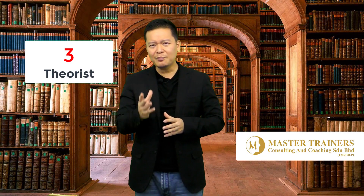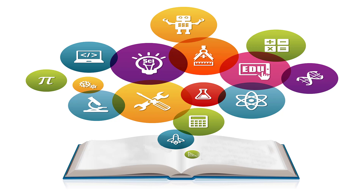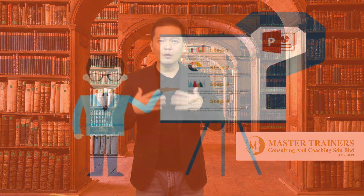The third type of audience is what I call the theorist. When theorists come to your class, they start questioning you: where did you get the information? Is it valid? Is there a theory, research, or statistics to support your argument? They are looking for models, frameworks, and concepts in order to understand where you are coming from.